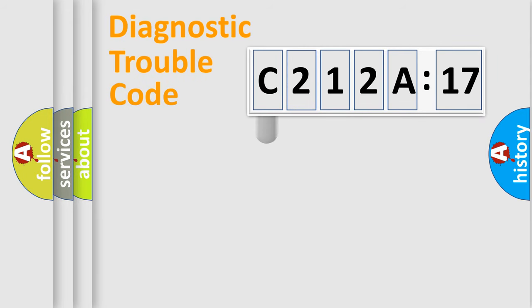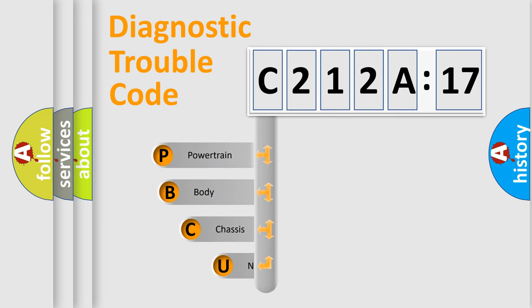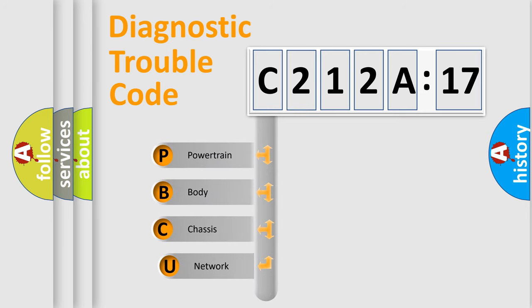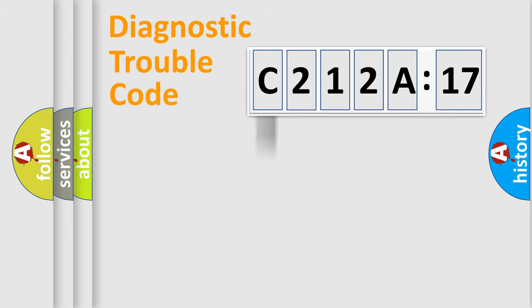First, let's look at the history of diagnostic fault code composition according to the OBD2 protocol, which is unified for all automakers since 2000. We divide the electrical system of an automobile into four basic units: Powertrain, Body, Chassis, and Network.